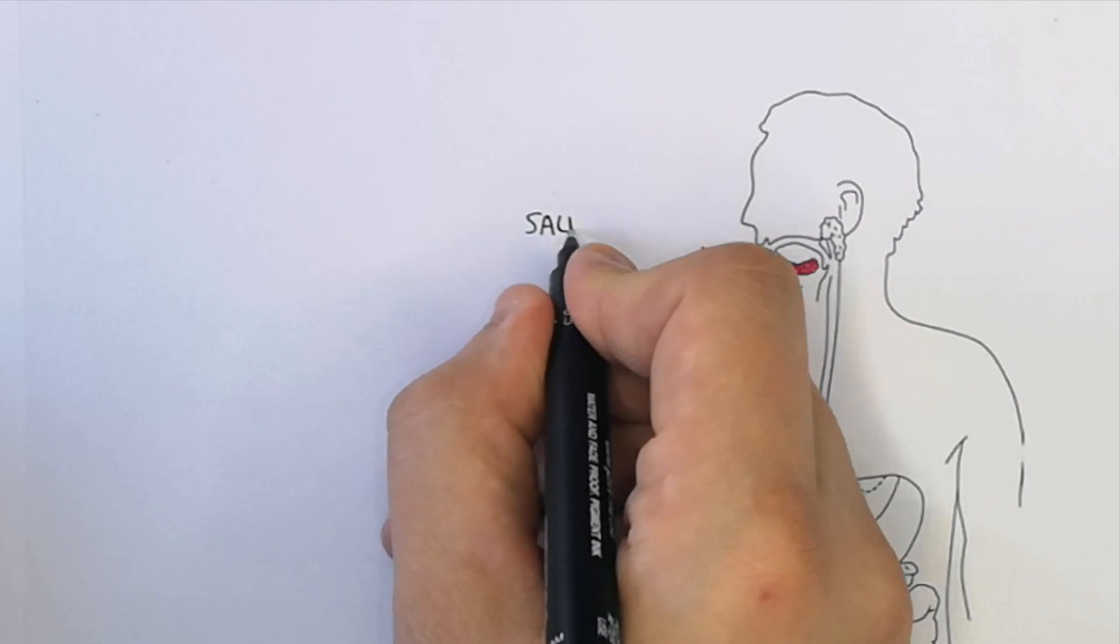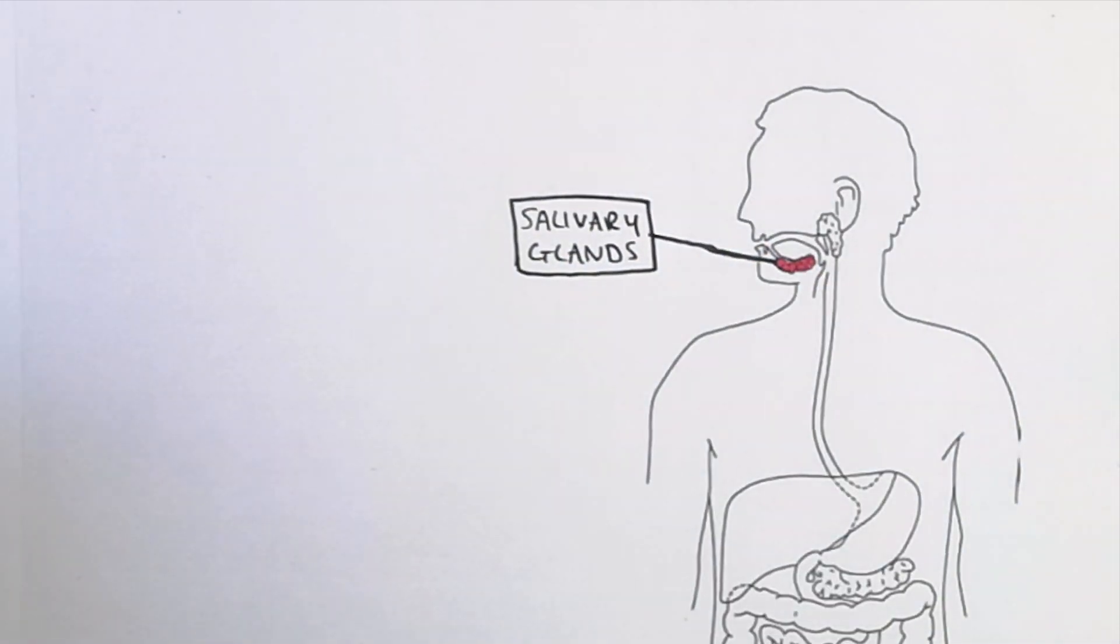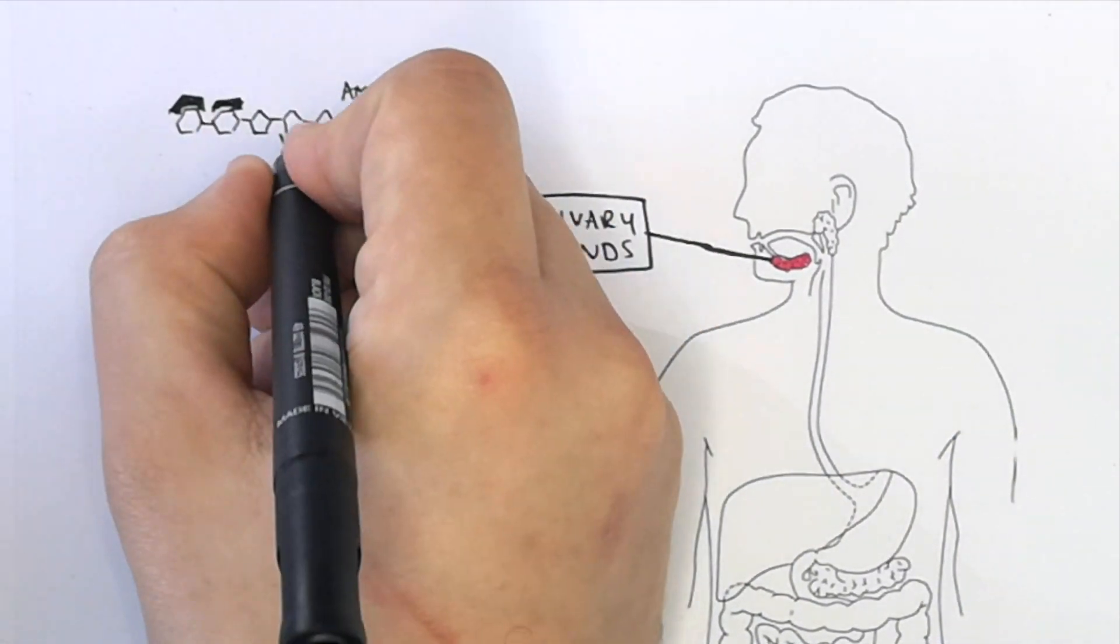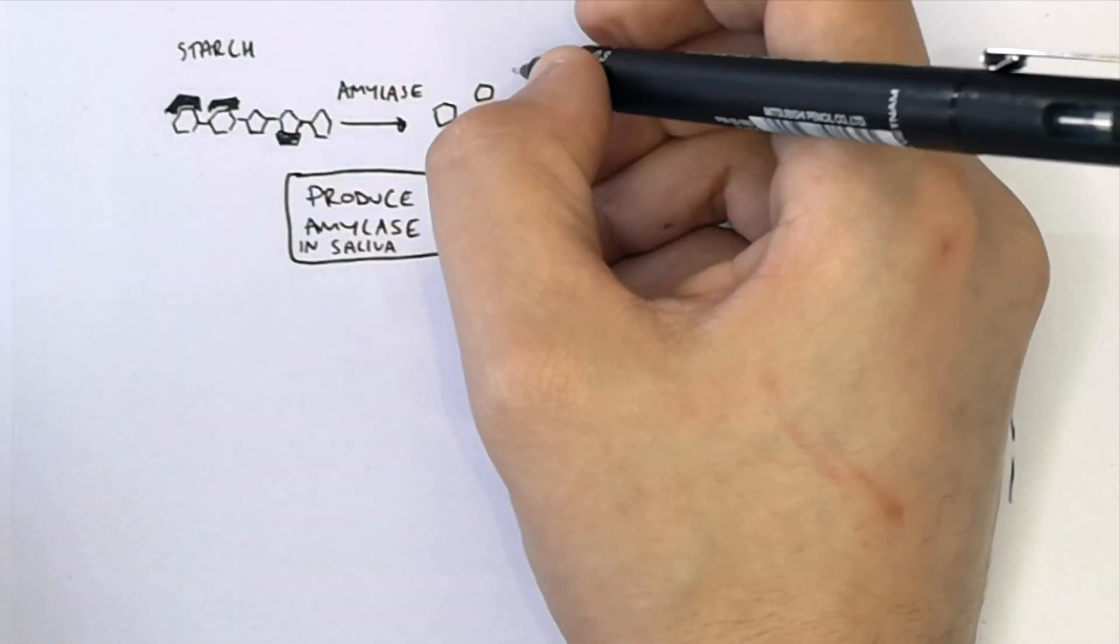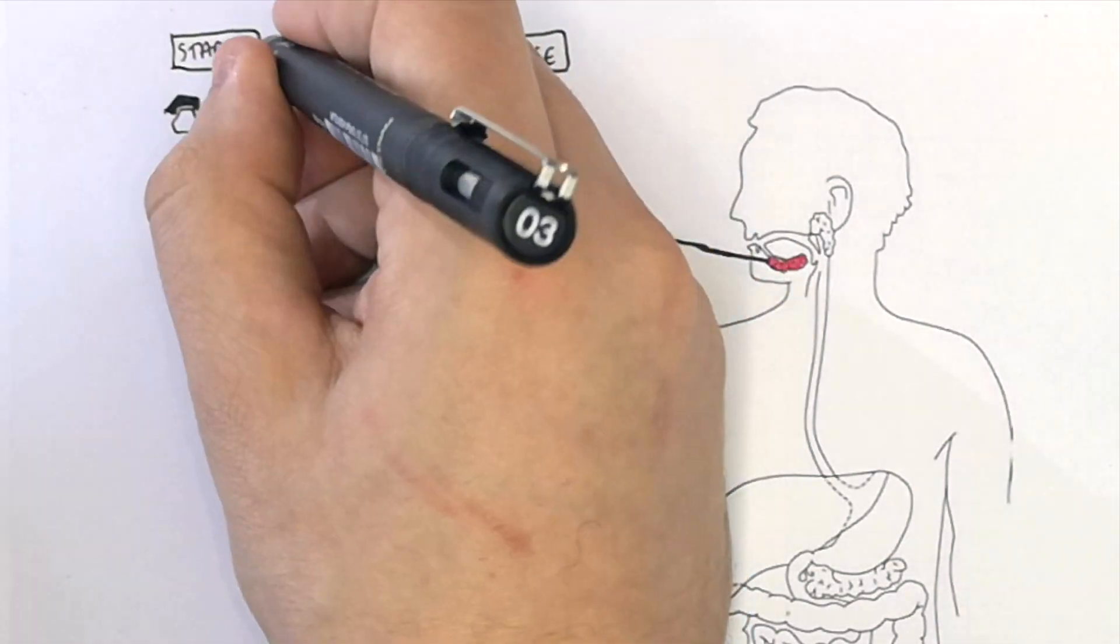Salivary glands produce saliva, which enters the mouth. Saliva contains the enzyme amylase. Amylase breaks down starch that you eat into glucose. Remember that amylase breaks down starch into glucose. This is the first step of digestion in your body.